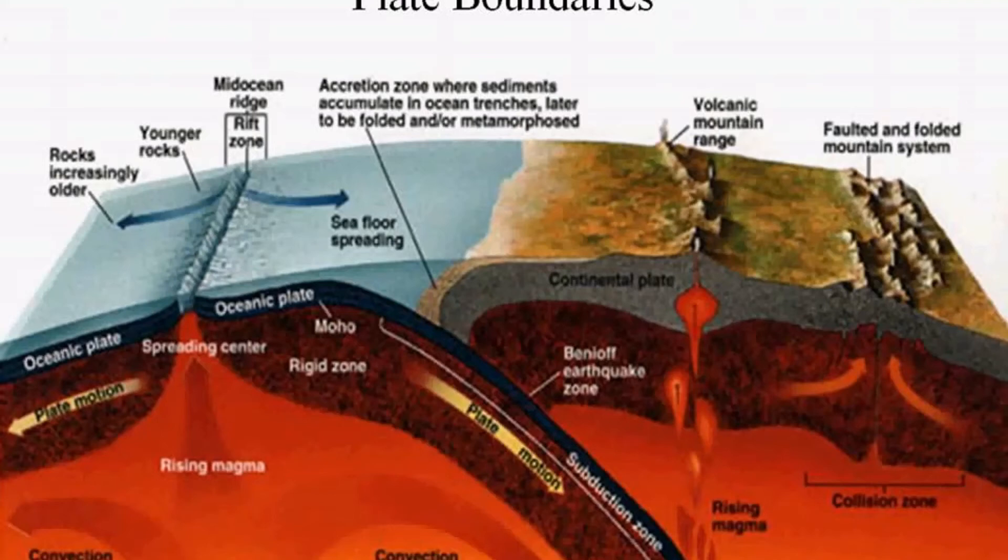Consequently, the age of the oceanic crust should increase with distance away from the ridge crests, and because recycling was its ultimate fate, very old oceanic crust would not be preserved anywhere. This model explained why rocks older than 200 million years had never been encountered in the oceans, whereas the continents preserve rocks almost 4 billion years old.